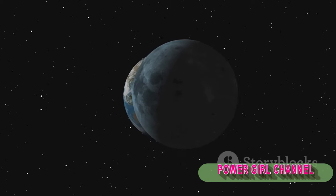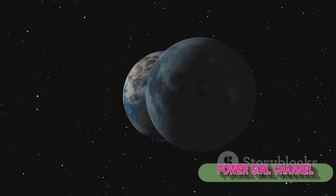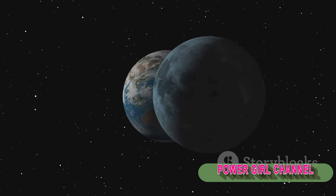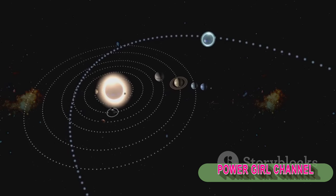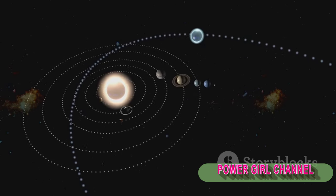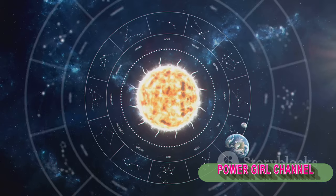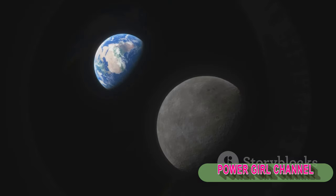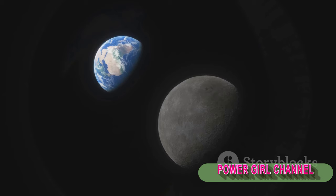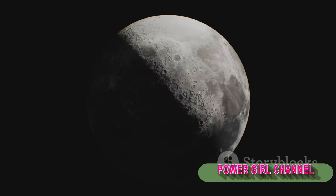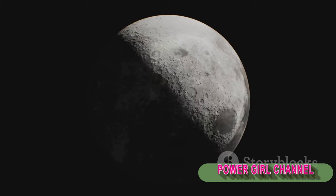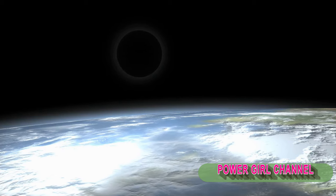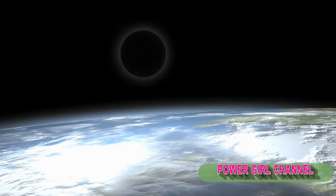The Moon's orbit is inclined at an angle of about 5 degrees to the Earth's orbit. Picture two hula hoops, one inside the other but tilted so they intersect at two points. These points of intersection are called nodes. The Moon doesn't always pass directly between the Earth and the Sun each month. The Moon needs to be near a node at the time of a new Moon for a solar eclipse to occur. If it's too far from a node, no eclipse.